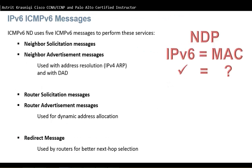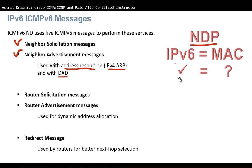IPv6 uses ICMPv6 messages — Internet Control Message Protocol version 6. There are five ICMPv6 messages. We have Neighbor Solicitation and Neighbor Advertisement, which are used for IPv6 address resolution from layer 3 to MAC address (layer 2), similar to IPv4 ARP, as well as for Duplicate Address Detection. IPv6 devices check that their address is not a duplicate by sending a Neighbor Solicitation; if another device answers with a Neighbor Advertisement, the address is not unique and must be changed. Neighbor Discovery Protocol uses NS and NA to map IPv6 addresses to MAC addresses.